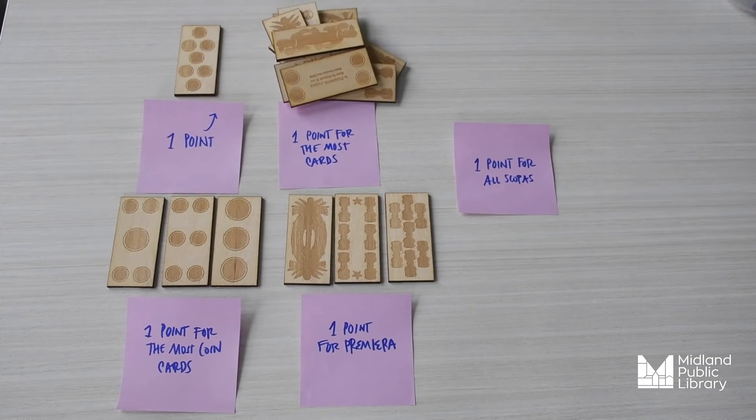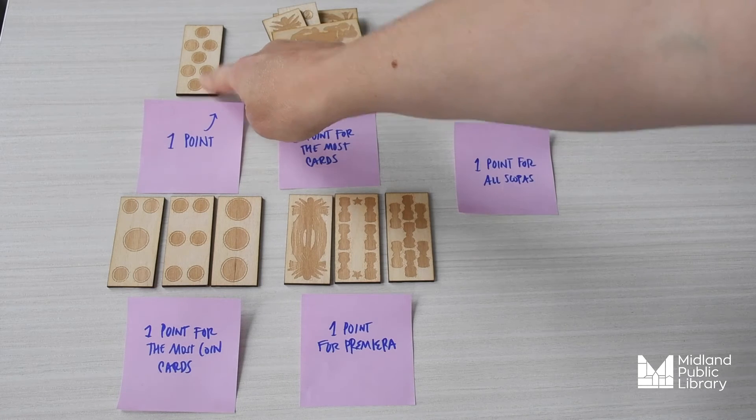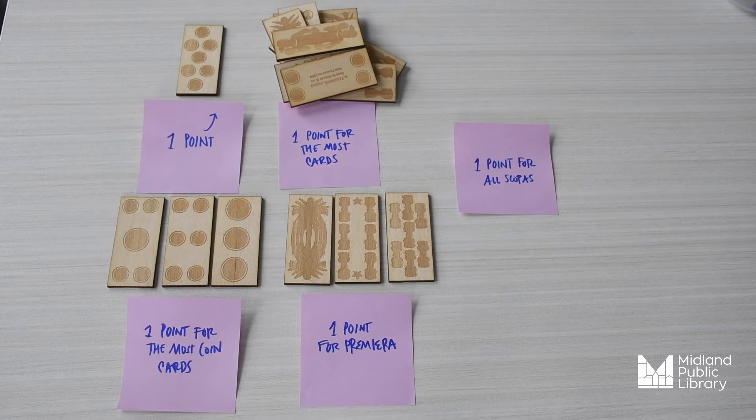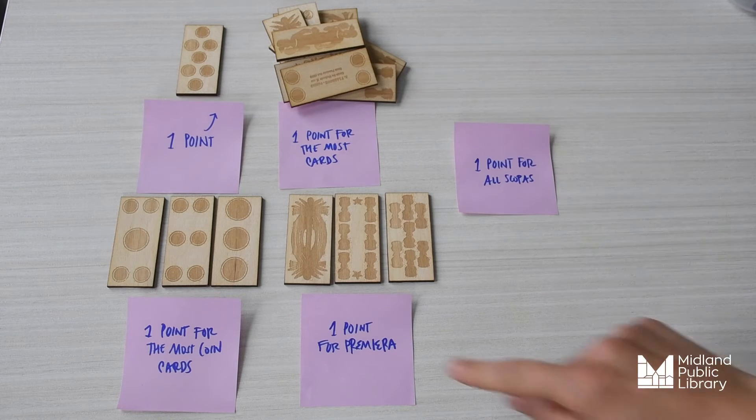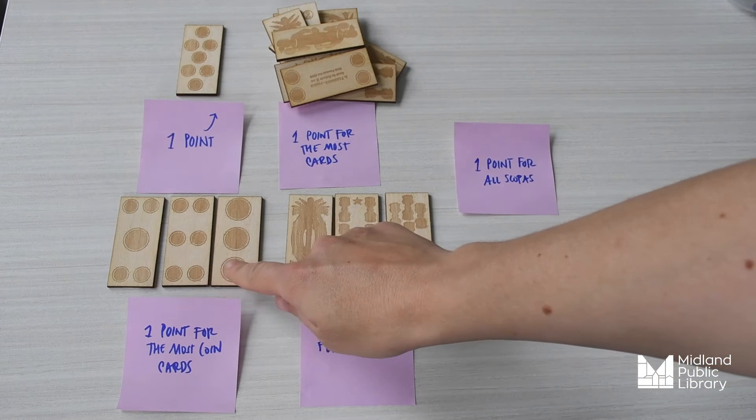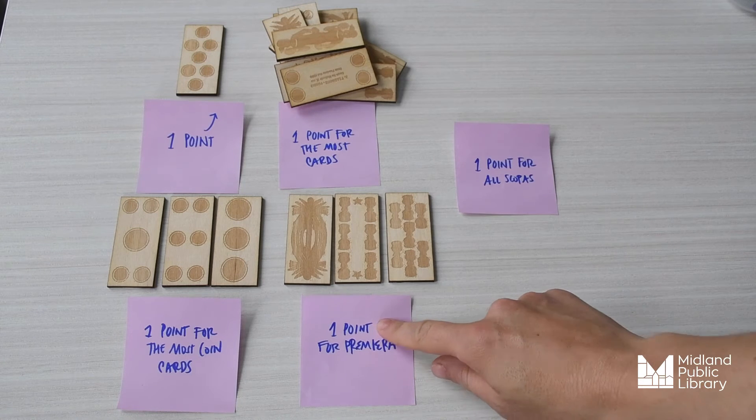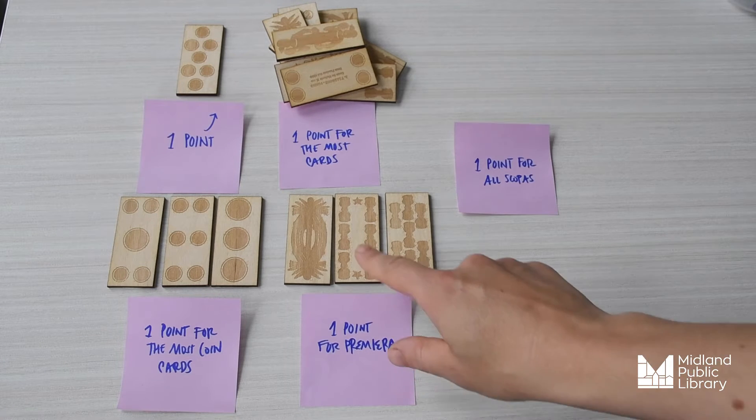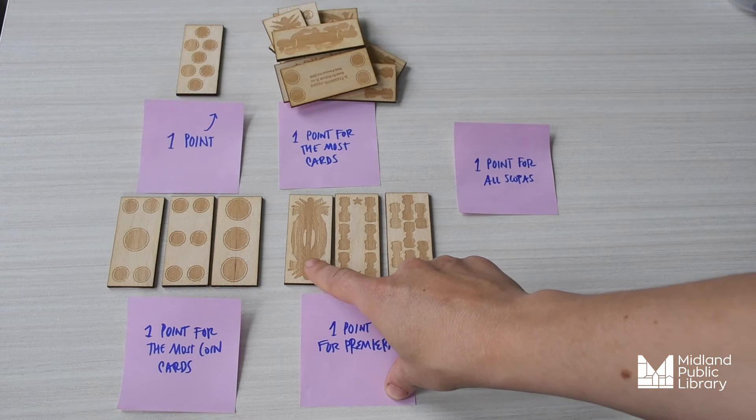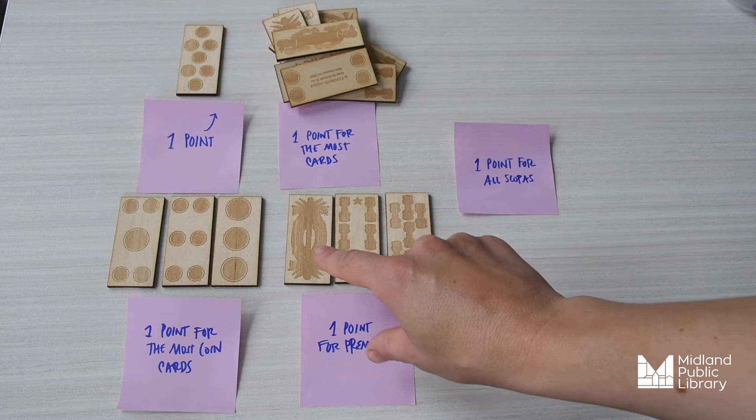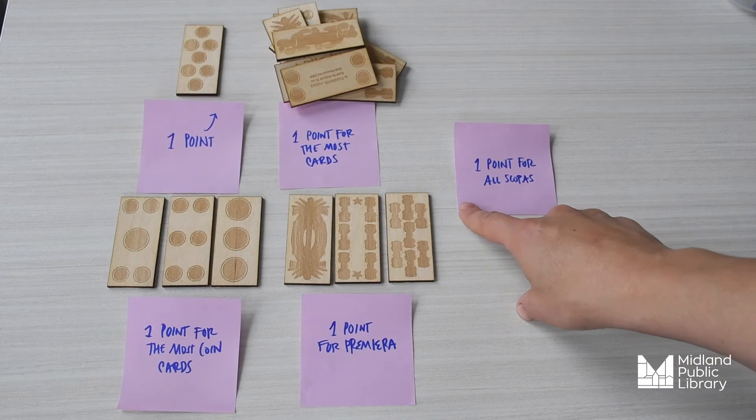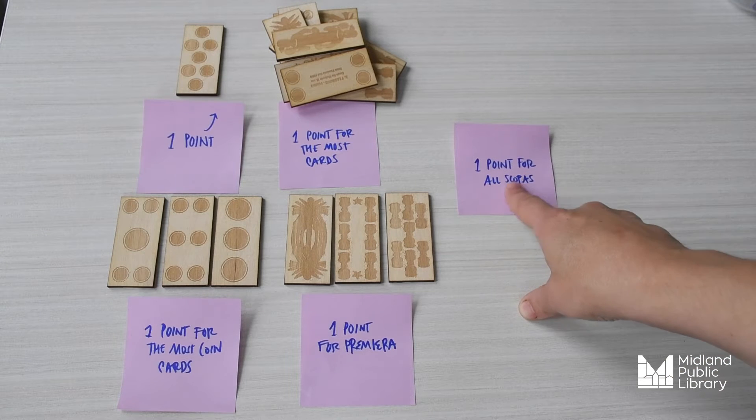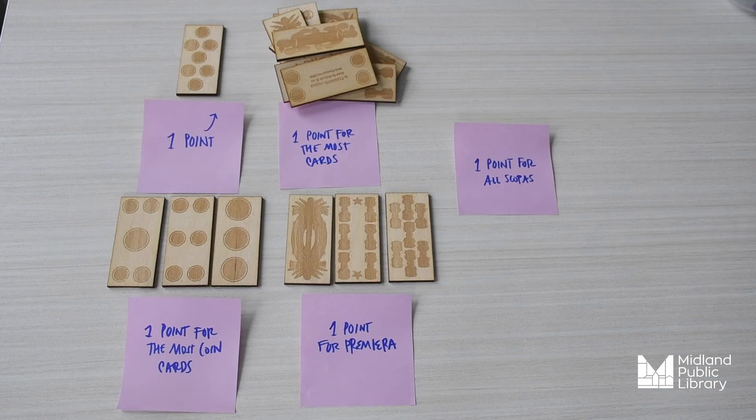This is how the point system works. You get one point for just having the seven of coins in your pile at the end of the game. You get another point for having the most cards. There's another point for having the most coin cards. And there's another point for having Primera. Primera is really the amount of cards that have the highest card count. And I'll explain that in just a moment to you. Following that, I'll explain what a point for every Scopa means by revealing how the game is played.